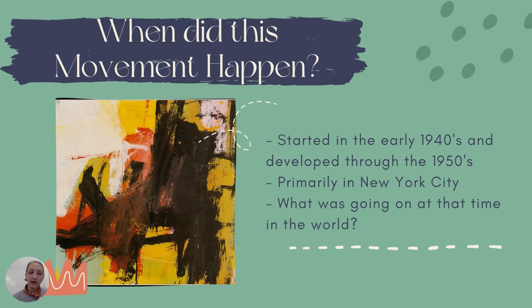So when did this movement happen? It started in the early 1940s and developed through the 1950s. It was also called the New York School — not just the Abstract Expressionist movement — which helps us remember that it primarily happened in New York City.